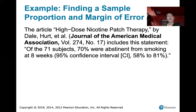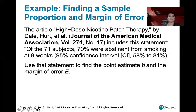So the sample size is n = 71, and 70 percent of those subjects were abstinent from smoking for eight weeks after the high dose nicotine patch therapy. That 70 percent is the point estimate. Then they give a 95 percent confidence interval from 58 percent to 81 percent. The question asks us to use that statement to find the point estimate p-hat and the margin of error e.